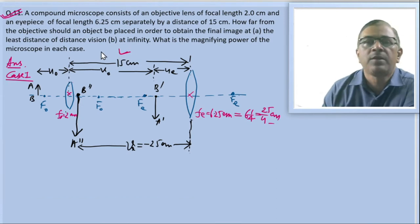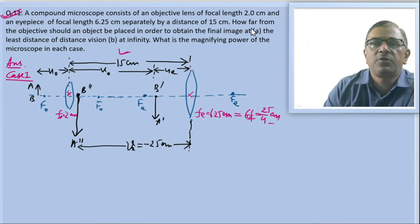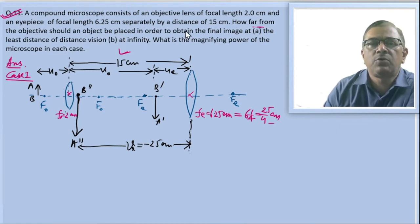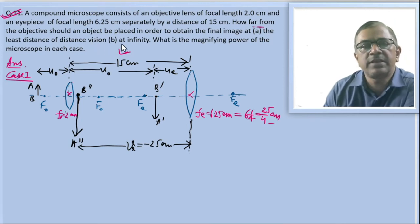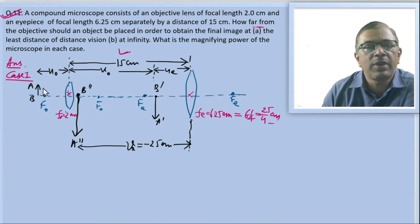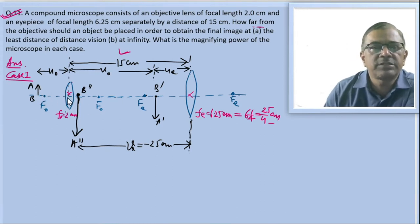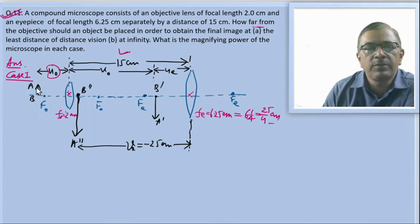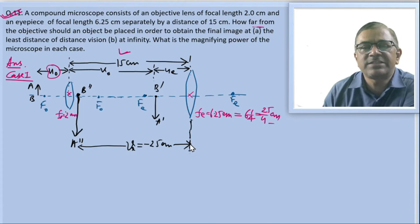We are supposed to find how far the objective should be from the object in order to obtain the final image at the least distance of distinct vision. In the second case, the final image should be formed at infinity, and we also need to calculate the magnifying power in each case. We need to find u_o, the position of the object, so that the final image A-double-dash B-double-dash is formed at the least distance of distinct vision.